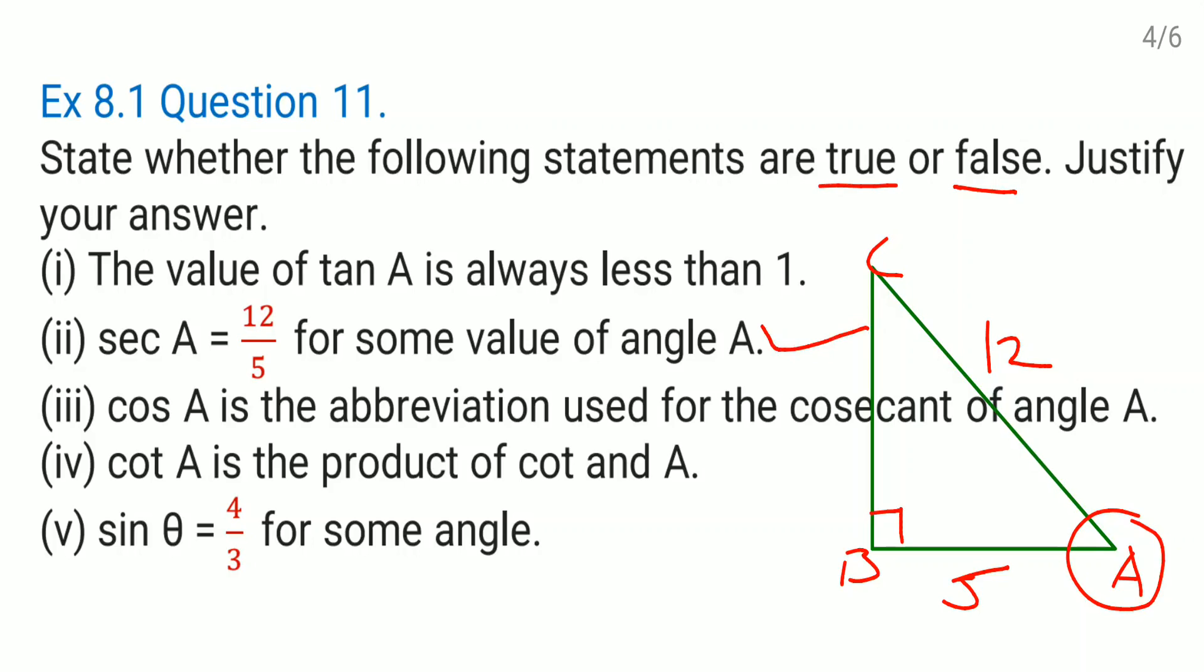Okay, now come to the third one. Here they said cos A is the abbreviation used for the cosecant of the angle A. Is that right? No, cos A is the abbreviation for cosine A, not for cosecant. So what you will write down: the given statement is false, and the justification is what? Cos A is abbreviation of cosine of angle A.